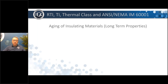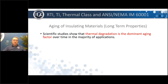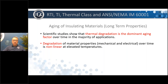So if we want to establish our RTI, that's what UL calls long-term properties. It involves aging of the insulating materials. Scientific studies have proven that thermal degradation is a dominant aging factor over time in the majority of applications. The degradation of material properties can be mechanical, electrical, or both, and over time it is non-linear at elevated temperatures.